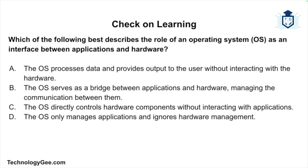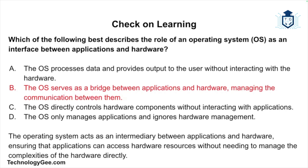Now let's do a check on learning. Question one: which of the following best describes the role of an operating system as an interface between applications and hardware? The correct answer is: the operating system serves as a bridge between applications and hardware, managing the communications between them. The operating system acts as an intermediary, ensuring that applications can access hardware resources without needing to manage the complexities of the hardware directly.